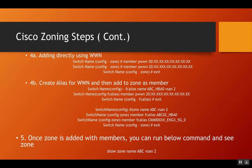To verify the zone was created correctly, rather than just assuming no errors means success, run the command 'show zone name ABC vSAN 2' — use whichever vSAN number applies to your infrastructure. This will confirm whether the zone exists. If it does not exist, it will return a message saying no such zone exists.